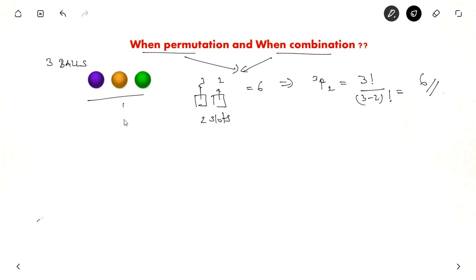Suppose the same 3 balls, you have to choose 2 balls. So here we use 3C2 which is nothing but 3 factorial, 3 minus 1 the whole factorial divided by 2 factorial which is 3.